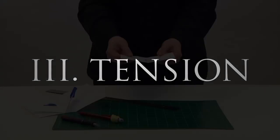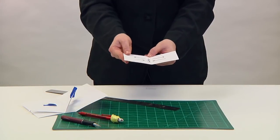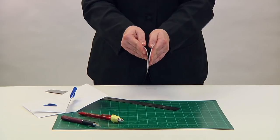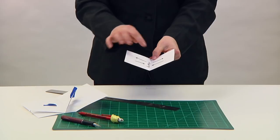Tension. The action of the pop-up relies on tension. By opening and closing the picture plane, also known as the spread, two planes draw close or move away from one another.